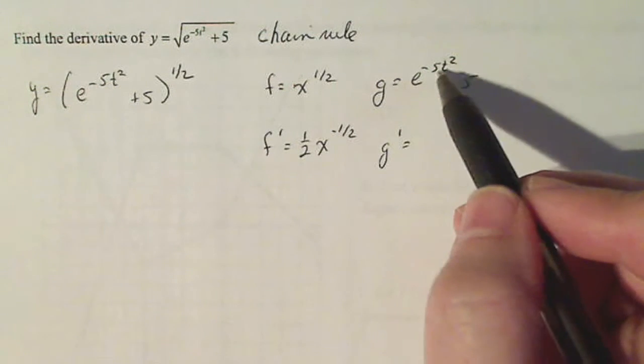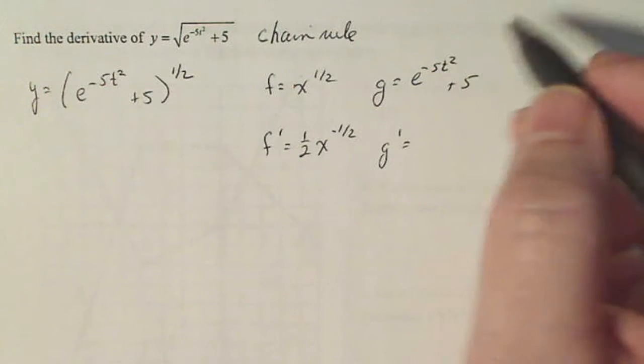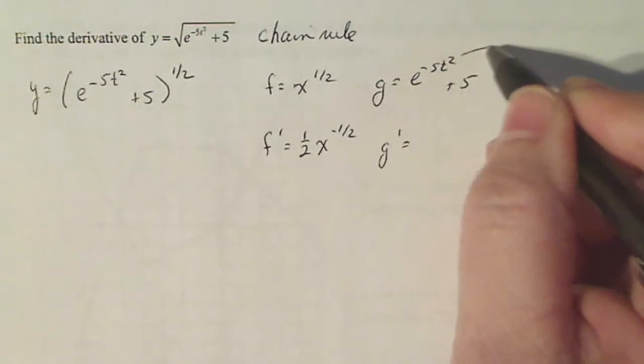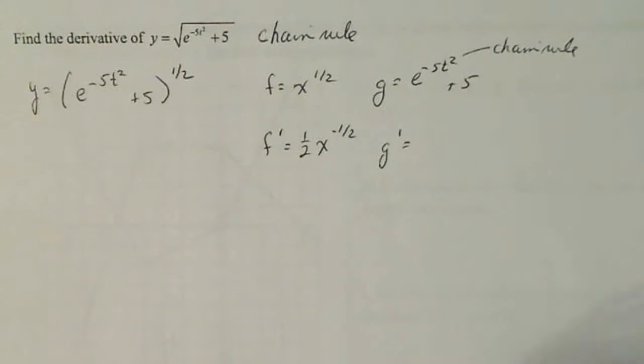So it's minus five t squared inputted into e to the t. So I have to use the chain rule here in order to get that derivative done.